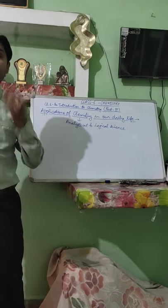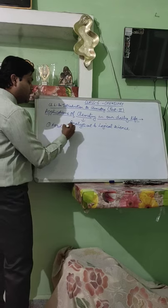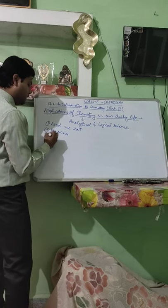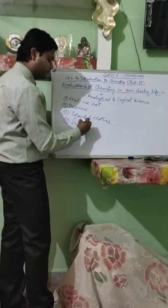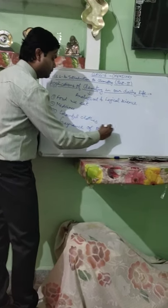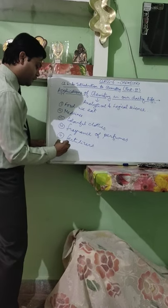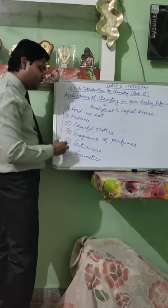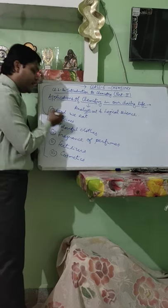In our daily life, what are the things we are seeing around us? We are using chemistry in one way or the other. For example, the food which we are eating, the medicines which we are using, the colourful clothes which we are wearing, the fragrance of perfumes and deodorants, the fertilisers which we are using for agriculture purposes, the cosmetics which we are using for beautification of mankind — all these things are a part of chemistry. So we are using chemistry in every field.